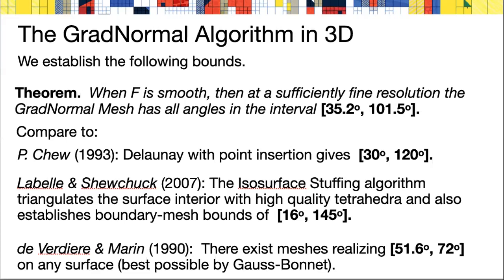This has running time comparable to the GradNormal algorithm, quite fast, but the angles aren't quite as good. The theoretical limit was established by de Verdiere and Marin. Gauss-Bonnet says you can do no better in general than about 51.6 to 72 degrees. De Verdiere and Marin gave a construction based on the uniformization theorem showing that you can approach these angles. Although the process of constructing it is not currently implemented in any algorithm.